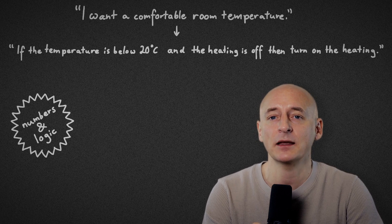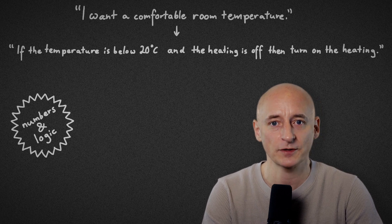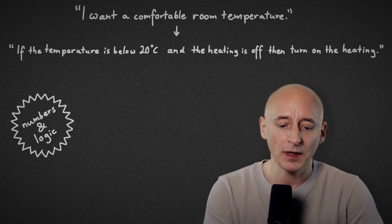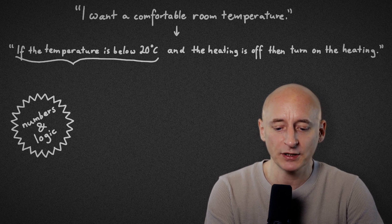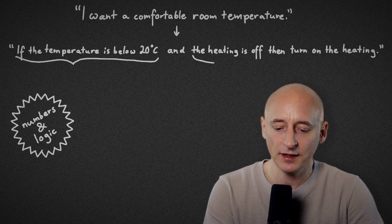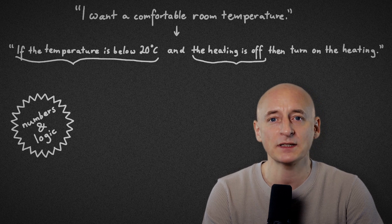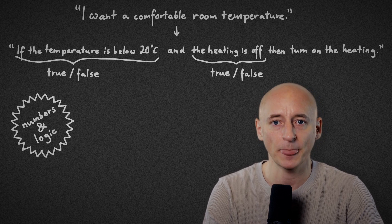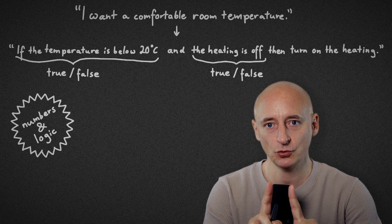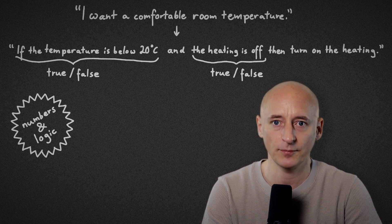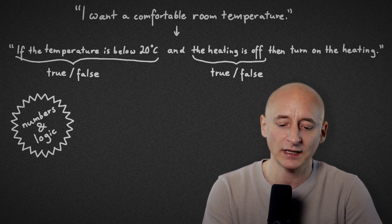Logical statements are sentences that can be either true or false. In our example, the temperature is below 20 degrees Celsius and the heating is off are both statements that can be true or false. Only when both parts are true, the heating is turned on. This is expressed by the word AND.